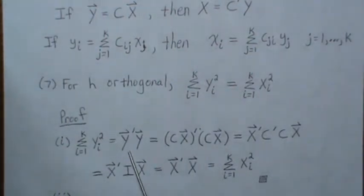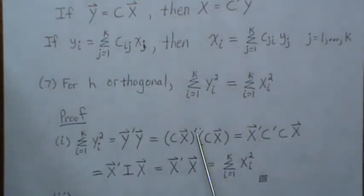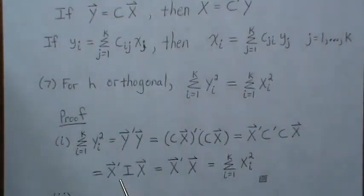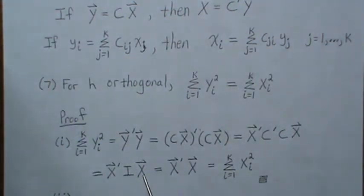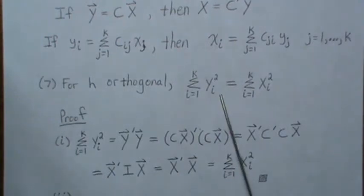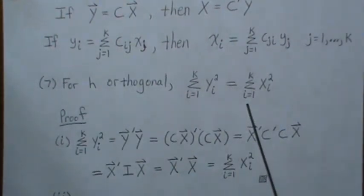A quick matrix proof of that property: the sum of Y squared is the vector Y transpose times Y. But Y equals CX, so we get X transpose times C transpose times C times X. The piece C transpose times C is the identity matrix because C is orthogonal, and so the identity times X transpose X gives us X transpose times X, which equals the sum of the X_i squared. That's the result — it's pretty important and we'll come back to it.